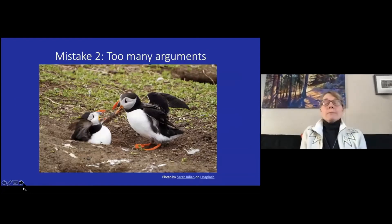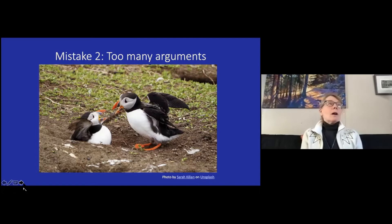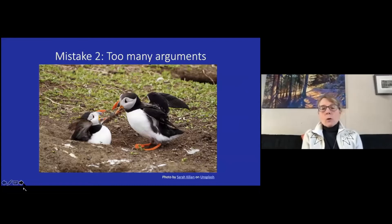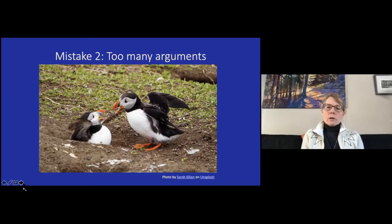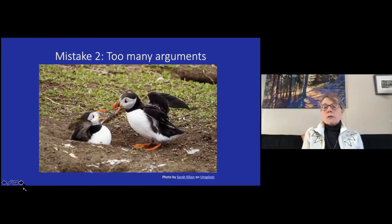Mistake number two: too many arguments. The vast majority of us, and particularly emerging scholars, want to cram their entire PhD thesis into one article, or put everything we've been thinking about for the last six months into one article. But that won't work. An article is a one-act play. It can support at most one or two arguments, maximum. So when you're mapping out your paper and you find yourself with too many arguments, perhaps it's time to think about two different papers. I have a paper I wrote about 10 years ago that became literally four papers.